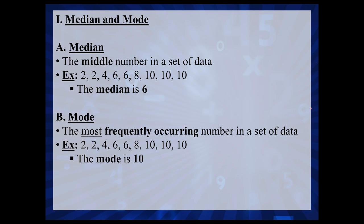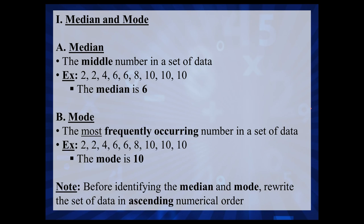In the example I provided, the data has already been nicely organized starting from the smallest number to the largest number. However, oftentimes we're going to get a set of data that is not organized for you. To correctly identify the median, and to most easily see the mode, you want to take all your data and write it in ascending order. Ascending order means the numbers are getting bigger — you're starting from lower numbers and going to higher numbers.